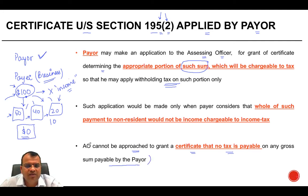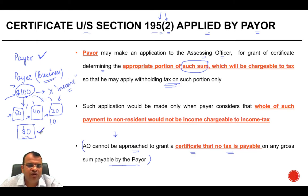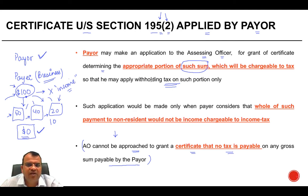The Assessing Officer cannot be approached to grant a certificate that no tax is payable on any gross sum payable by the payer. From a legal perspective, supported by case laws, if you think the entire amount is not chargeable to tax — that it is zero — you cannot go to the AO to confirm that aspect through an application under Section 195(2).